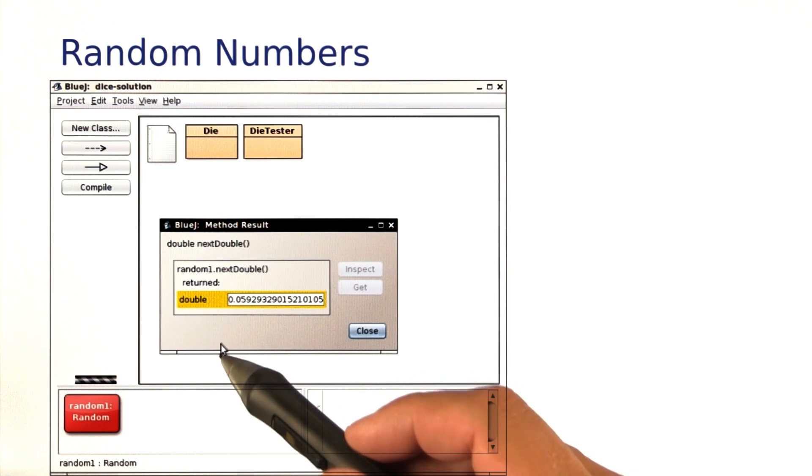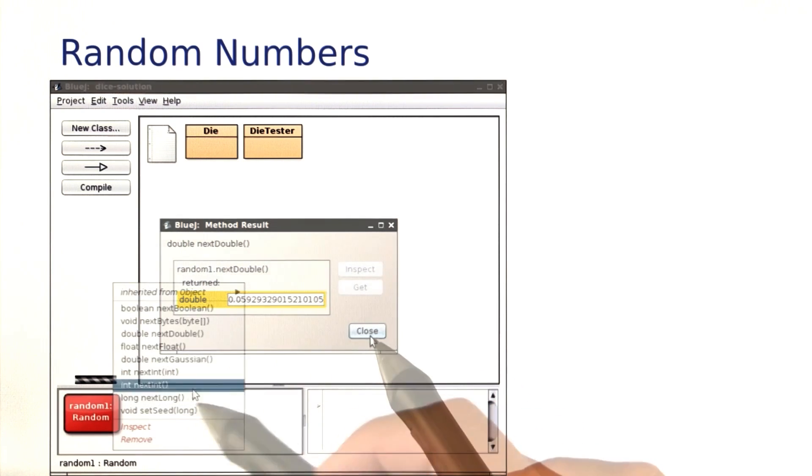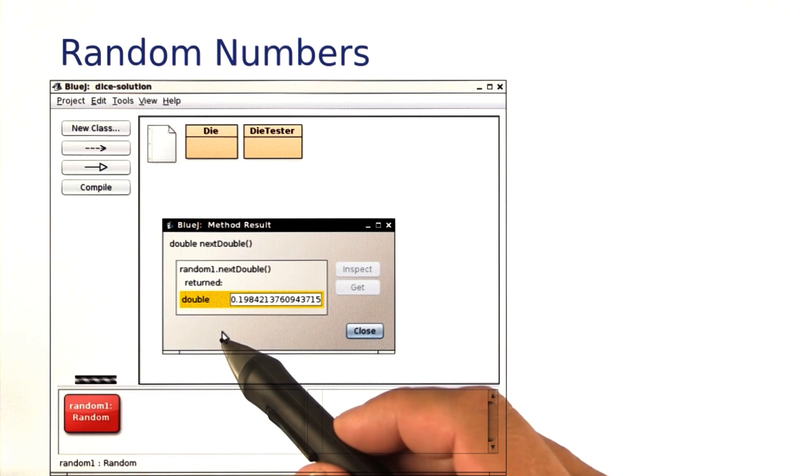Let's ask it for next double, and we get 0.05 and change. That looks pretty random. Next time when we ask it, we get a different random number, 0.19 and so on.